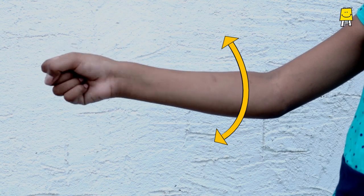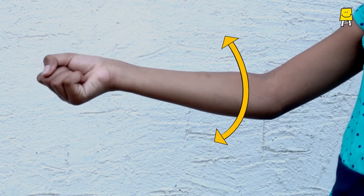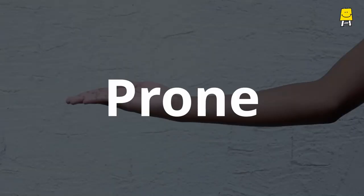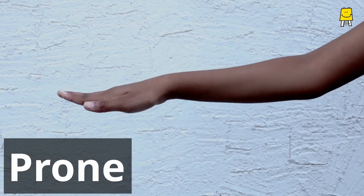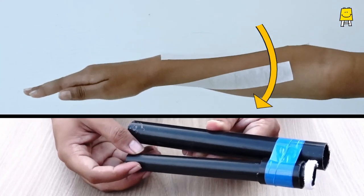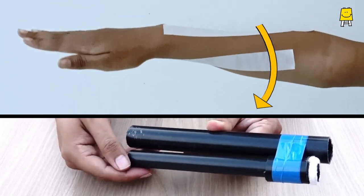This twisting action has two movements of bones. Prone, that is when the palm faces downwards. In this motion, one bone twists over the other.